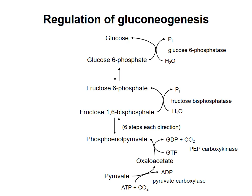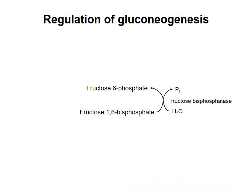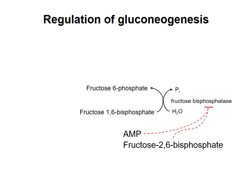Regulation of flux through gluconeogenesis is accomplished by regulation of the irreversible steps in the pathway. As an example, I'll talk about regulation of fructose bisphosphatase, which is inhibited by two compounds. Fructose 2,6-bisphosphate increases in concentration when insulin is present in the bloodstream, indicating high blood glucose. Therefore, it makes sense that it inhibits an enzyme in gluconeogenesis, the whole point of which is to make glucose for release into the bloodstream. If blood glucose is already high, then there is no need to perform gluconeogenesis.